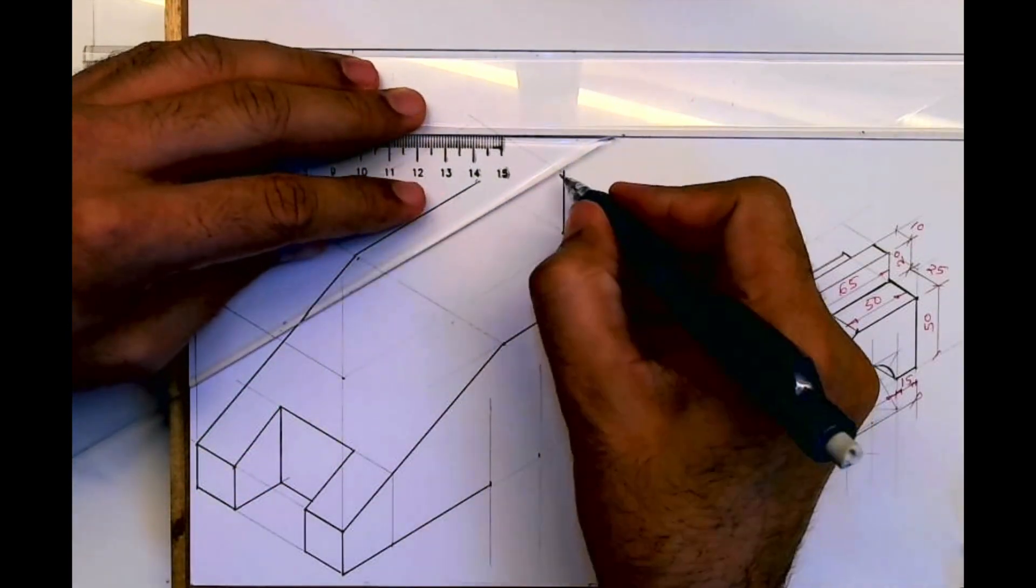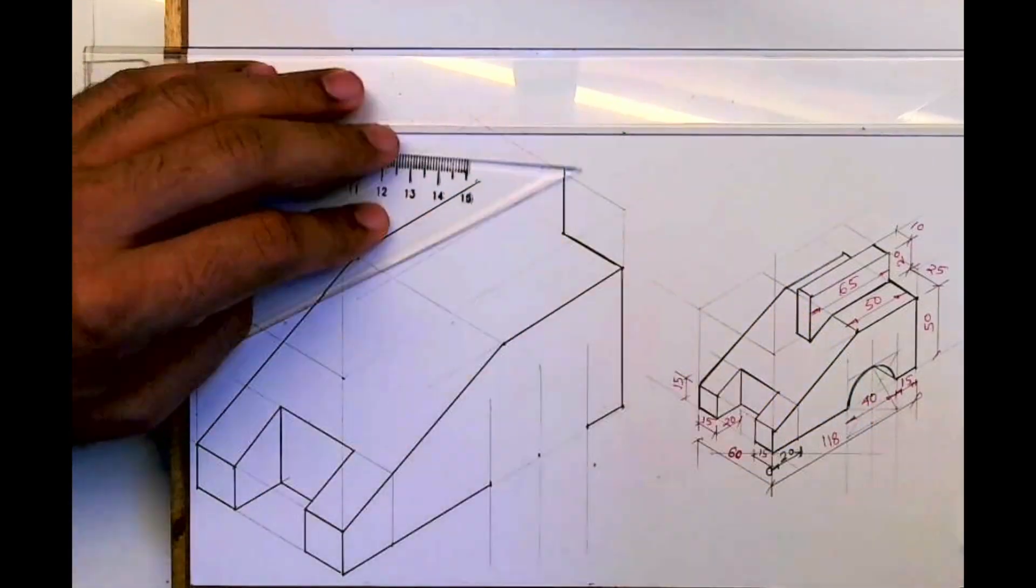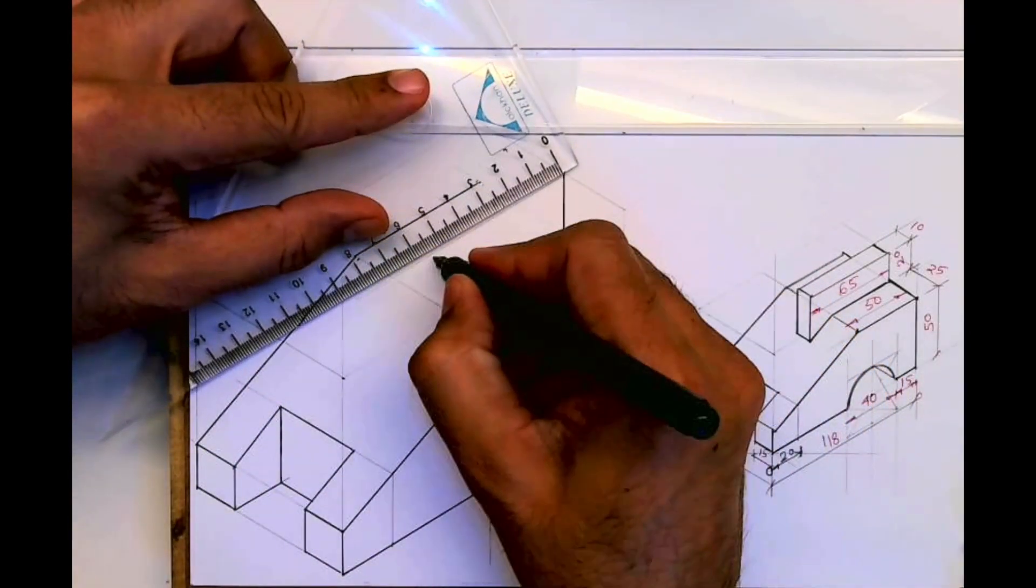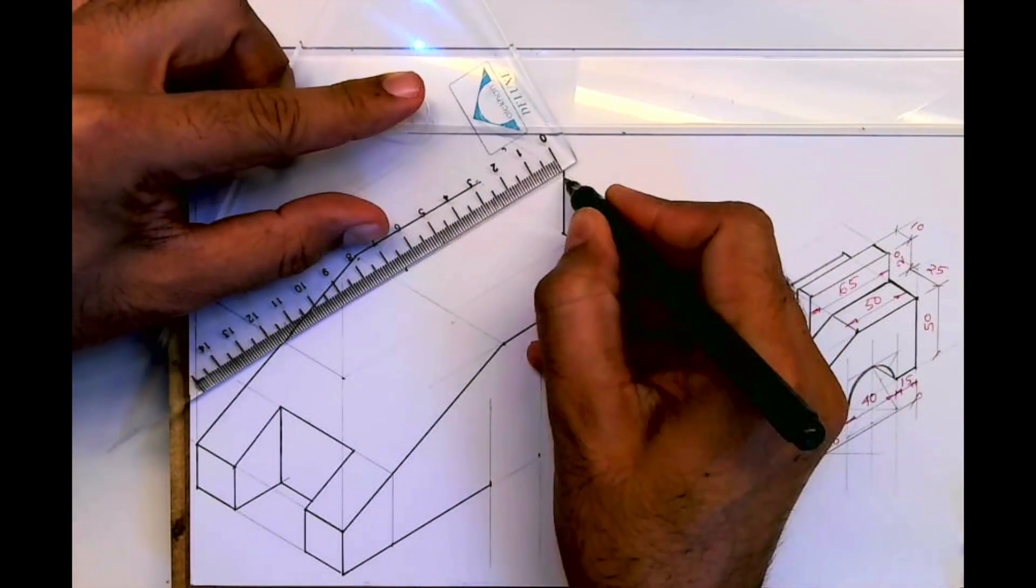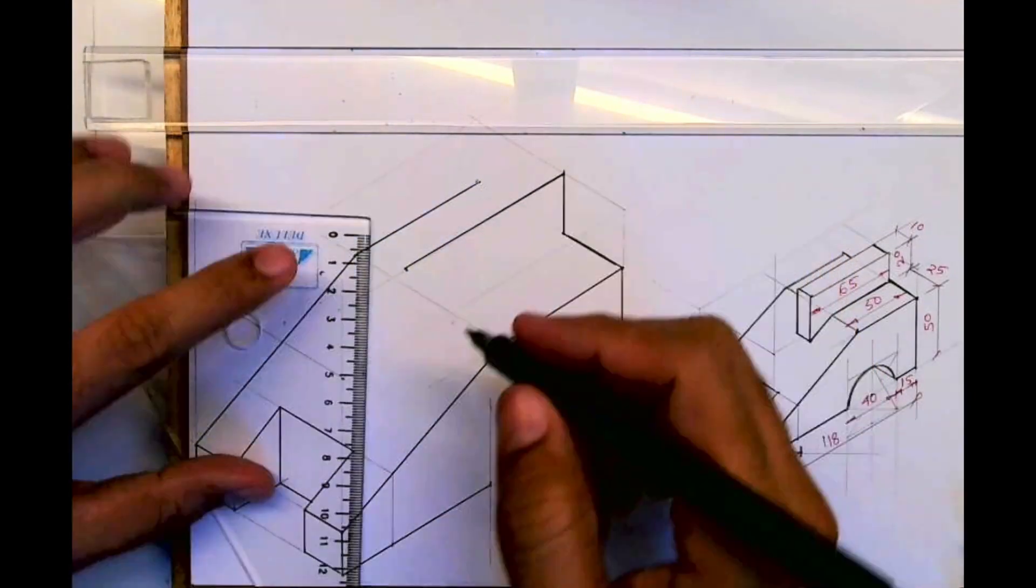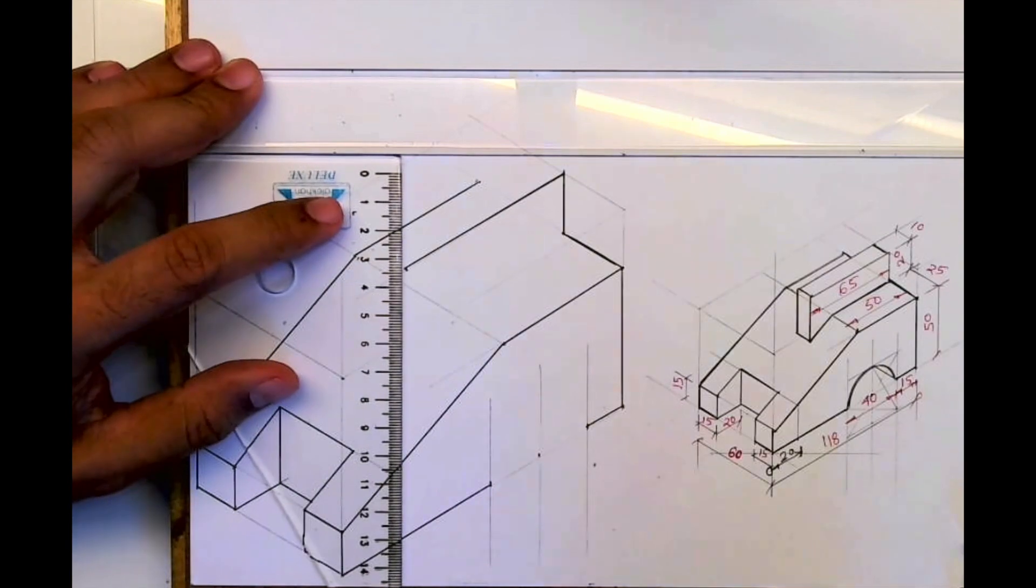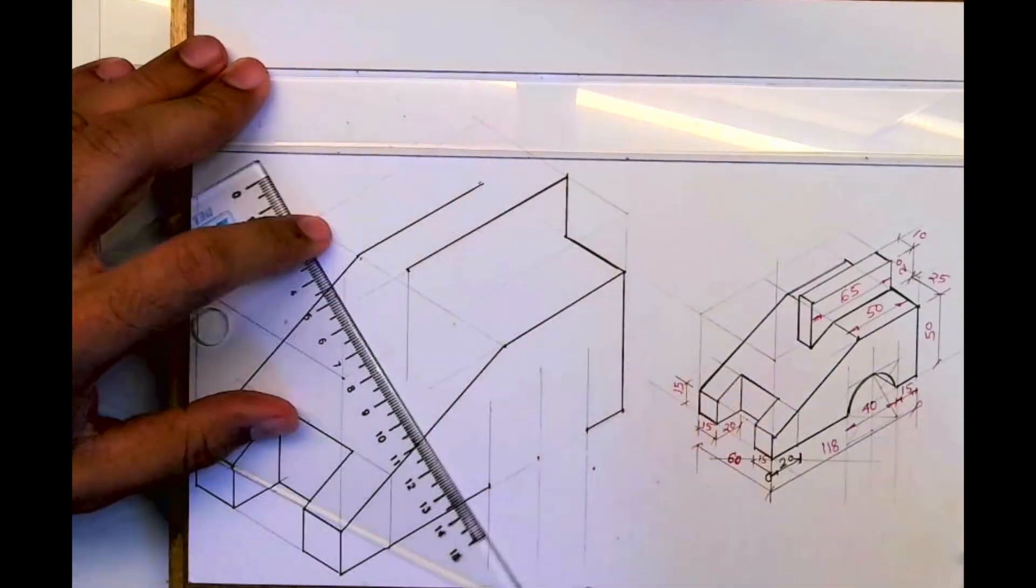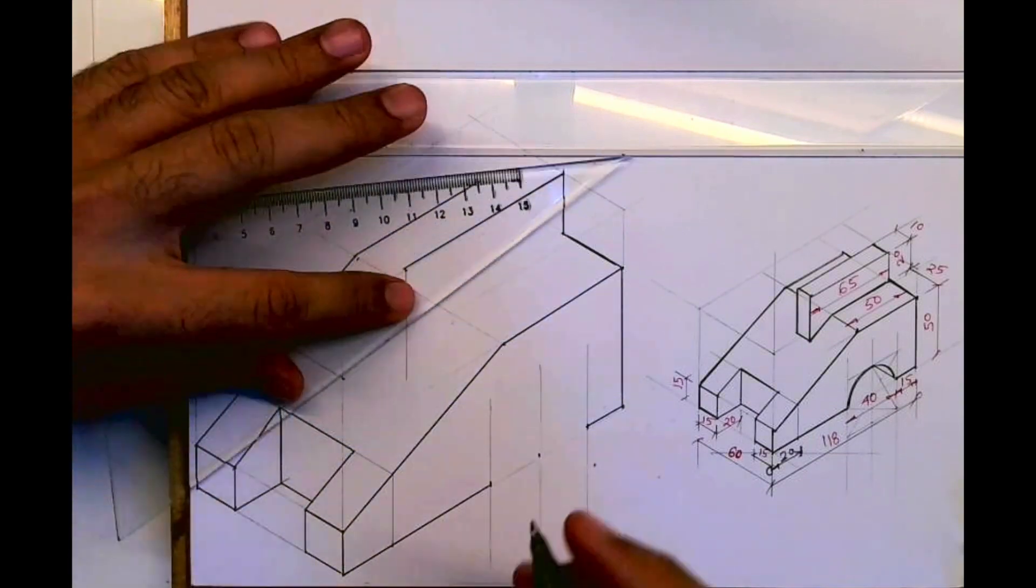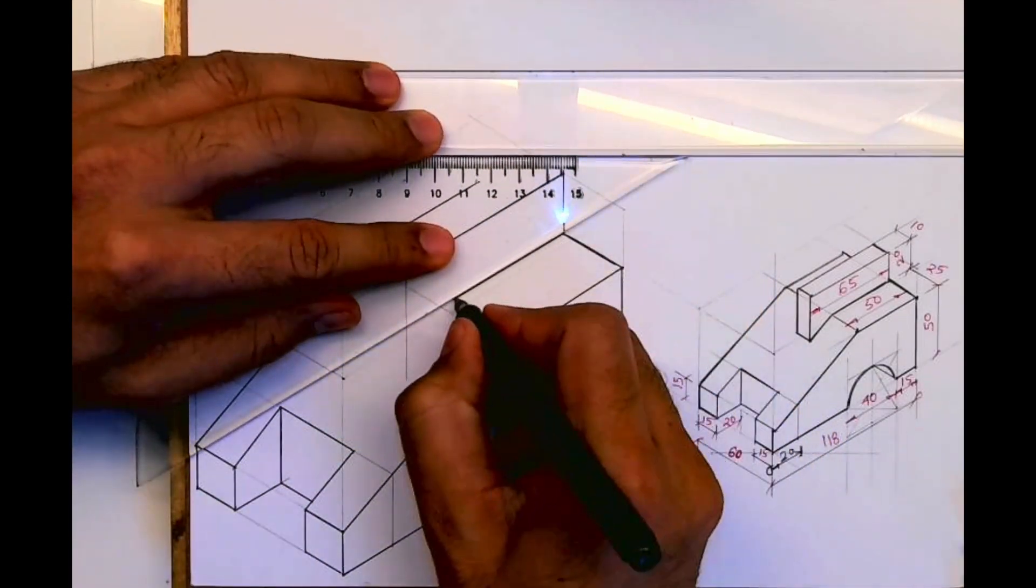Then you go up by 20. Then you take 65, then you draw a vertical line.